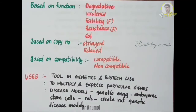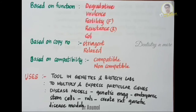The first type is degradative plasmids — they digest unusual substances like toluene and salicylic acid. Example: tol plasmid of Pseudomonas. The second type is virulence plasmids — they contain VIR genes, which help in the pathogenicity of that particular bacteria. Example: TI and RI plasmids.